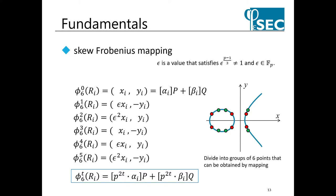Next, I will explain the skew-Frobenius mapping used to efficiently run the rho method. Rational points on the BN curve can be divided into groups of six points that can be obtained by the skew-Frobenius mapping. If you can find one rational point, you can calculate all the rational points in the same group. Then the parameters alpha and beta required for the rho method can also be calculated. In this study, the representative point in the six-point group is defined as the point with the maximum x-coordinate and an even y-coordinate. The search range can be reduced to one-sixth by dividing into groups of six points each.